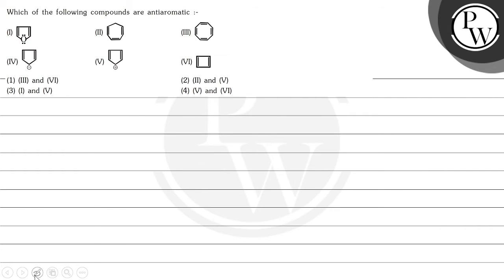Hello, let's read this question. The question asks which of the following compounds are anti-aromatic, with the given options being: 2nd and 6th, 2nd and 5th, 1st and 5th, and 5th and 6th. So here we have to find out anti-aromatic compounds.